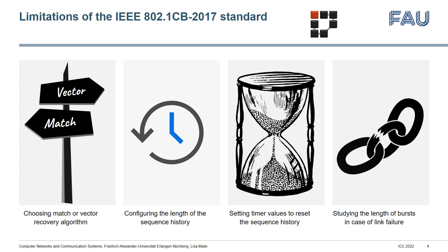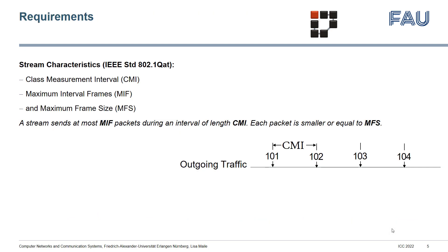In particular, we prove which configuration works when you have to choose between the recovery algorithms, when you want to configure the length of the sequence history, or set the timer values for the sequence history. We also study the effect of bursts if a link failure occurs. We show the correctness of our solutions both theoretically and in simulations, and we propose that these solutions could extend the existing standard to serve as guidance for users in the future.